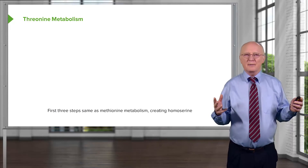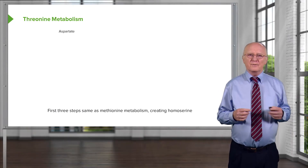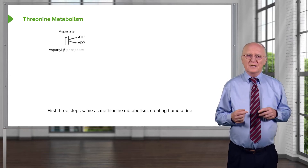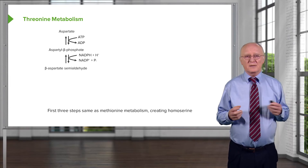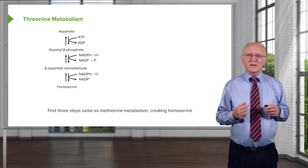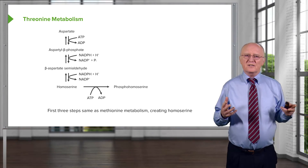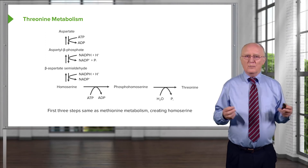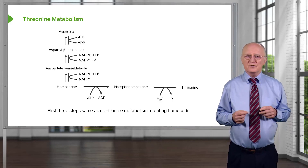The next amino acid metabolism we will consider is that of threonine. Threonine's metabolism overlaps a bit with methionine metabolism. The first three steps of the synthesis of threonine from aspartate are the same as the first three steps in the synthesis of methionine: aspartate is converted to aspartyl beta-phosphate by a phosphorylation, then to beta-aspartate semialdehyde by a reduction, and homoserine is created by another reduction. In the next step, homoserine is phosphorylated to make phosphohomoserine using ATP, and then phosphohomoserine is dephosphorylated through a molecular rearrangement, producing threonine.